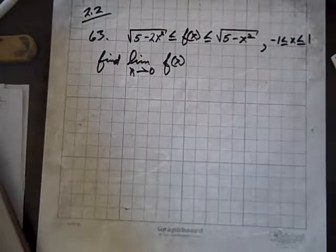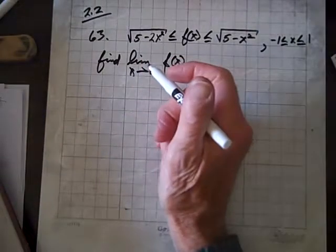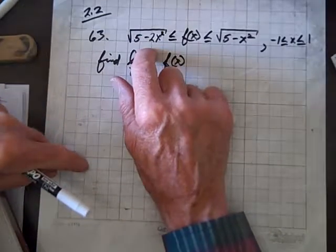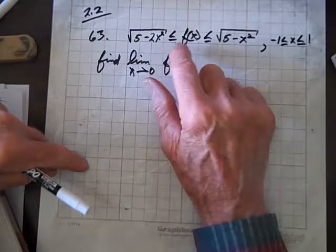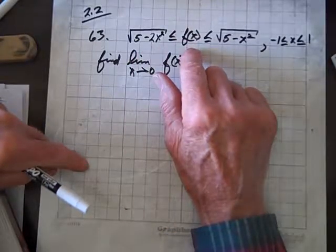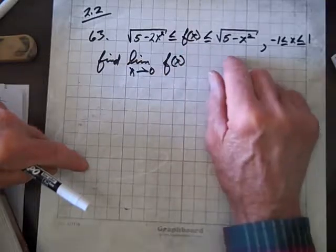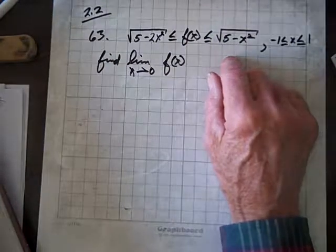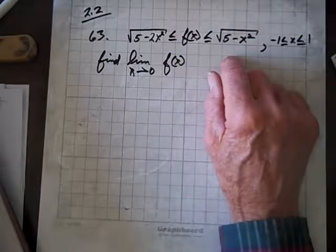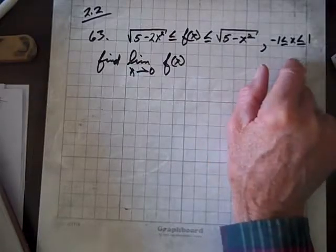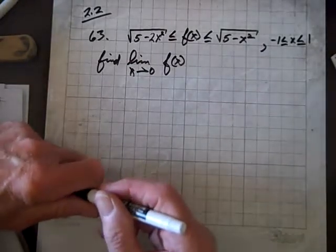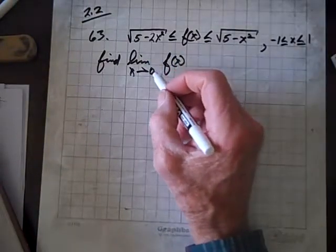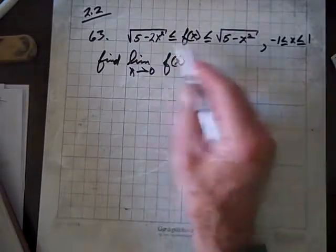Okay, we're doing question 63 on 2.2, and we're given that the square root of the quantity of 5 minus 2x squared, which is less than or equal to f of x, which is less than or equal to the square root of the quantity of 5 minus x squared, on the interval negative 1 to 1. With that, we have to find the limit as x goes to 0 of f of x, given this.